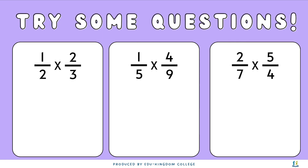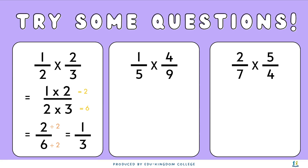With that simple idea, there are some questions for us to try. If you've got the hang of it already, please pause the video and have a go. Let's look at the first question on the left: 1 over 2 times 2 over 3. We times the numerators — 1 times 2 gives us 2 — and the denominators — 2 times 3 gives us 6 — so we have a new fraction of 2 over 6. Simplifying by dividing both numerator and denominator by 2 gives us one third.